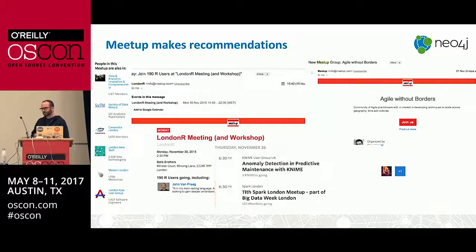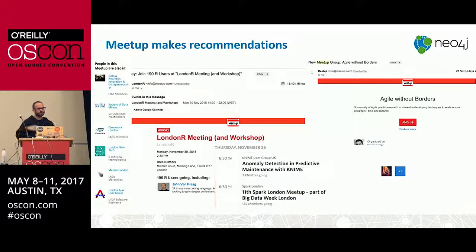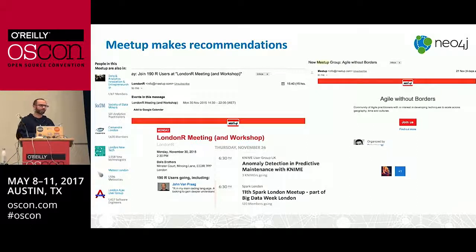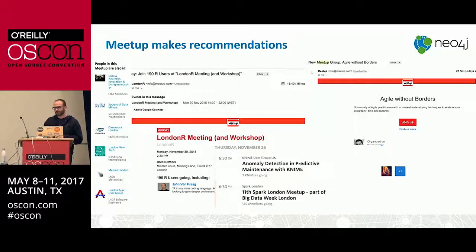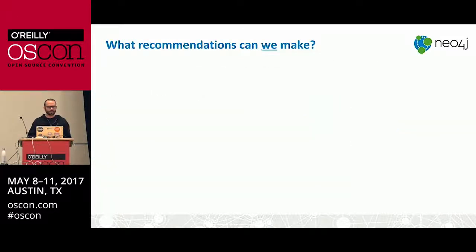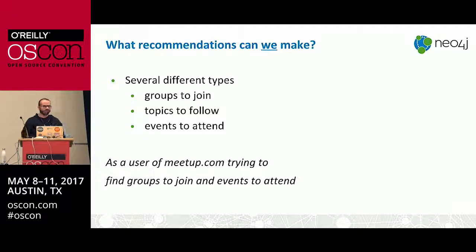The same applies to things like Twitter — 'these are people you might be interested in following.' There's limited screen real estate we can use. So in order for recommendations to actually encourage people to engage with our application, we need to make sure that they're as relevant as possible. That's key in coming up with recommendations, especially personalized recommendations.